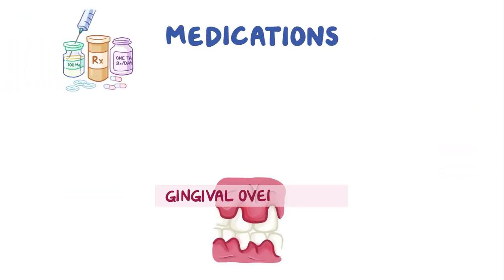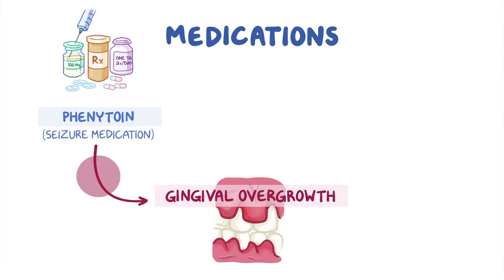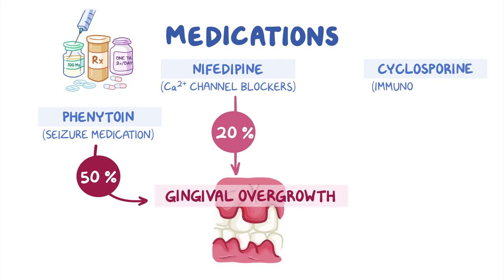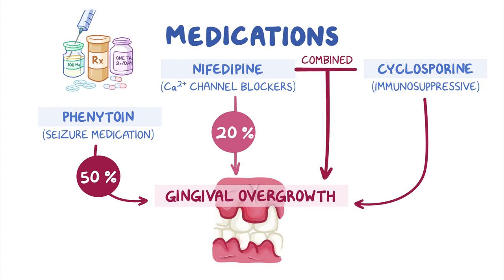Medications that cause gingival overgrowth can also increase the risk of periodontal disease. Individuals on phenytoin, a seizure medication, develop gingival hyperplasia in about 50% of cases. Calcium channel blockers such as nifedipine cause gingival enlargement in 20% of cases. Cyclosporine, an immunosuppressive medication used to prevent organ rejection after transplantation, is also associated with this side effect. If combined, nifedipine and cyclosporine can cause severe overgrowth of the gingiva.